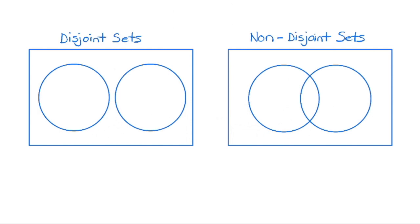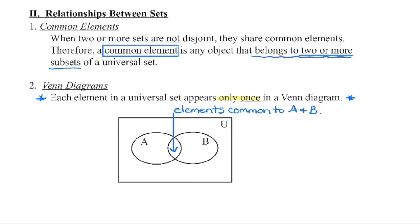If we have non-disjoint sets, there is an intersection where the elements common to both sets will appear within this intersecting region on the Venn diagram. As each element in the universal set can only appear once, this intersection region is where we place all elements belonging to both A and B.